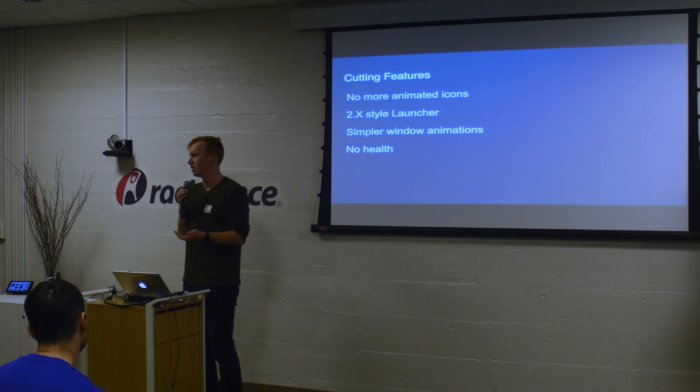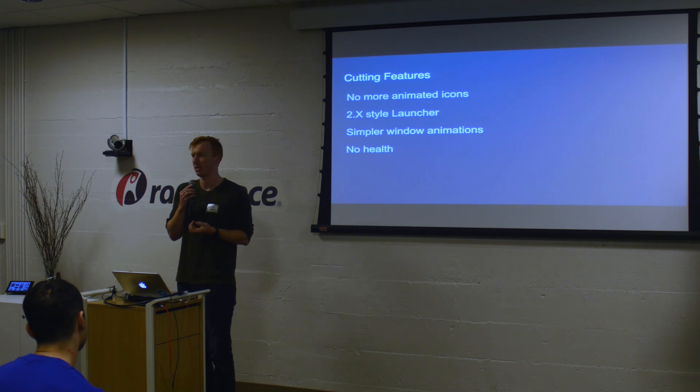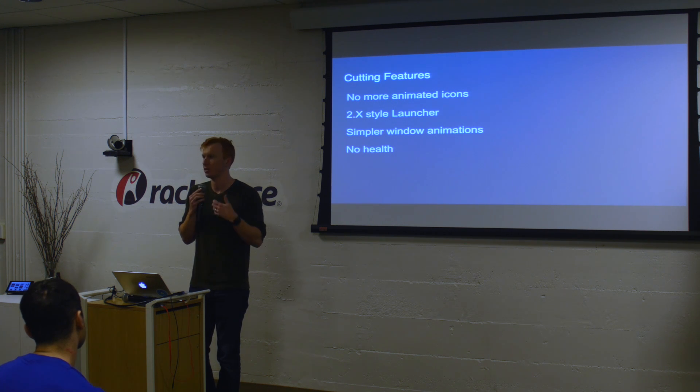We also moved back to the older style of launcher. The new launcher with the big icons is actually much more expensive to implement to get all the animations right and make it look beautiful. So we had to switch back to the older 2.x style of launcher, and also simplified a lot of the animations — things are more simply sliding rather than twisting around. And Pebble and Pebble Steel don't support health — not because we hate those users, but because that feature is really expensive to implement. It's a large code base dynamically analyzing all the sensors in your watch, and we just couldn't fit it in.